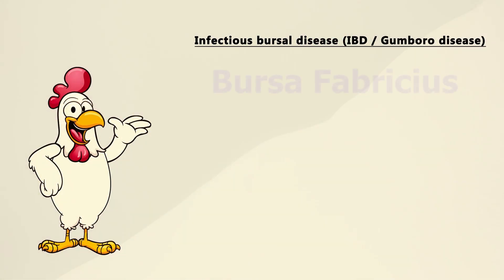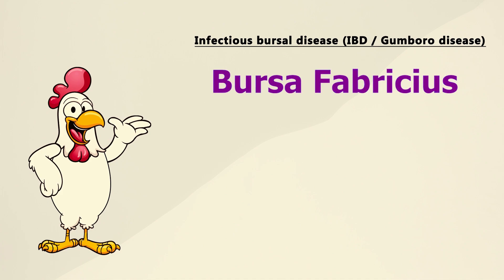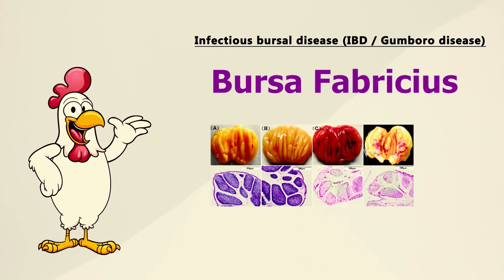In post-mortem lesions of the affected bird, main lesions are found in the bursa fabricius. The bursa fabricius is usually very much enlarged — three to four times normal size — and edematous. Normally the bursa fabricius is whitish in color, but in this disease it becomes yellowish. Sometimes the bursa fabricius shows hemorrhages throughout.